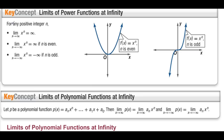Limits of power functions at infinity. For any positive integer n, the limit as x approaches infinity of x^n equals infinity. Even if n is even or odd, we shoot off to infinity to the right. The limit as x approaches negative infinity of x^n equals infinity if n is even — both ends go to infinity. If n is odd, the limit as x approaches negative infinity is negative infinity. For example, f(x) = x³: as x goes to negative infinity, y shoots down to negative infinity.